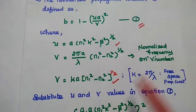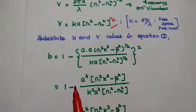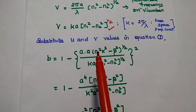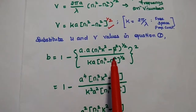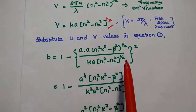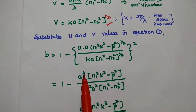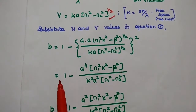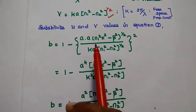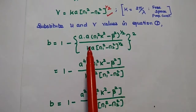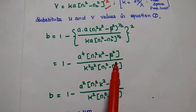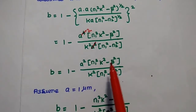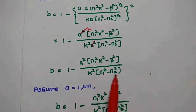Substituting these two values into the first equation, we get b (the normalized propagation constant) equal to 1 minus a·u divided by v, all squared. After substitution, u = a·(n1²k² − β²)^(1/2) and v = k·a·(n1² − n2²)^(1/2). With a⁴ from a·a and cancelling the square root, we get: b = 1 − [a⁴(n1²k² − β²)] / [k²a²(n1² − n2²)], which simplifies to b = 1 − [a²(n1²k² − β²)] / [k²(n1² − n2²)].